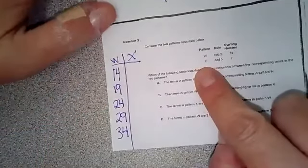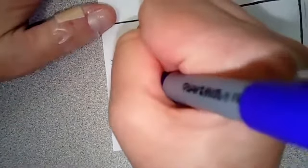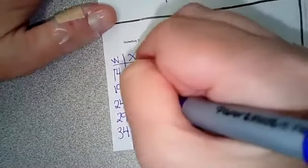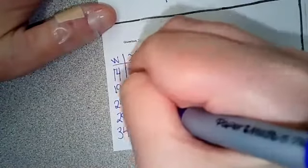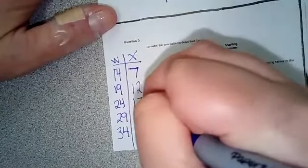Now let's look at our X pattern. X I'm gonna start with 7, so the 7 corresponds with the 14 and I'm gonna add 5 every time. 7 add 5 is 12, 12 add 5 is 17, 17 add 5 is 22.